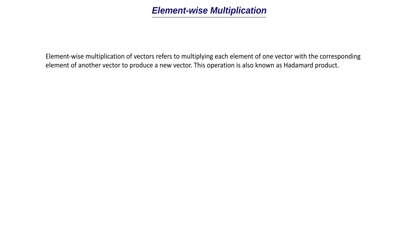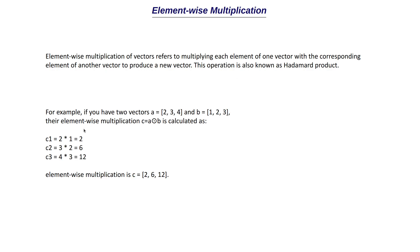Taking a concrete example: vector a equals 2, 3, 4 and vector b equals 1, 2, 3. Element-wise multiplication is represented as c = a ⊙ b. The result c has elements: c1 = 2×1, c2 = 3×2, c3 = 4×3. So we multiply the first elements together, the second elements together, and the third elements together, forming a new vector. The result of this element-wise multiplication is c = 2, 6, 12, which is also a vector.